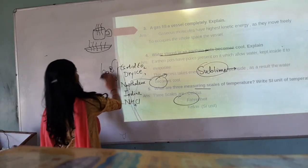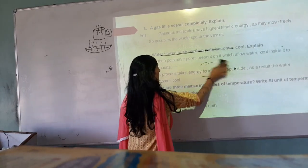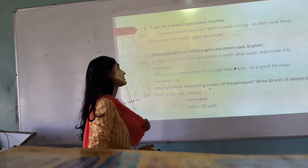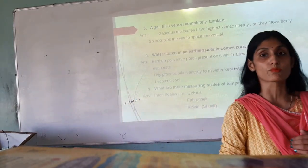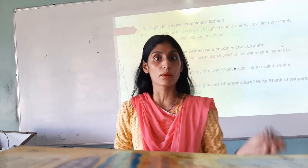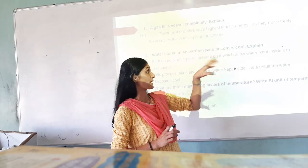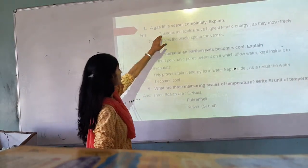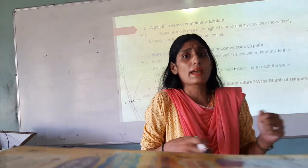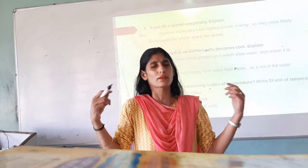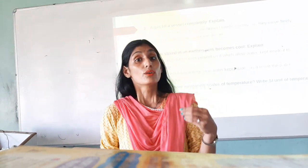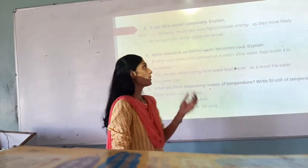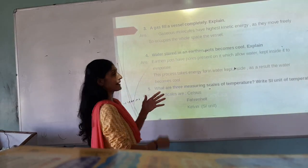A gas fills a vessel completely. These are the important questions. Gaseous molecules move randomly. You cannot identify where oxygen is or where nitrogen is. The molecules are very tiny particles. Gaseous molecules have the highest kinetic energy, and kinetic energy is the energy of motion. So they move really fast and occupy the whole space — whether it is a bottle, a cylinder, or a room.